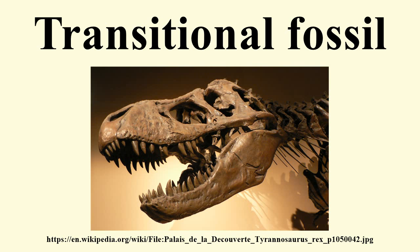The first complete specimen was announced in 1861, and ten more Archaeopteryx fossils have been found since then. Most of the eleven known fossils include impressions of feathers, among the oldest direct evidence of such structures. Moreover, because these feathers take the advanced form of flight feathers, Archaeopteryx fossils are evidence that feathers began to evolve before the late Jurassic.